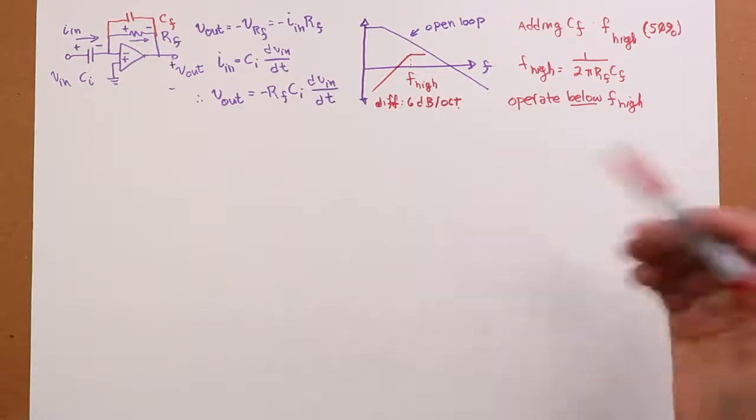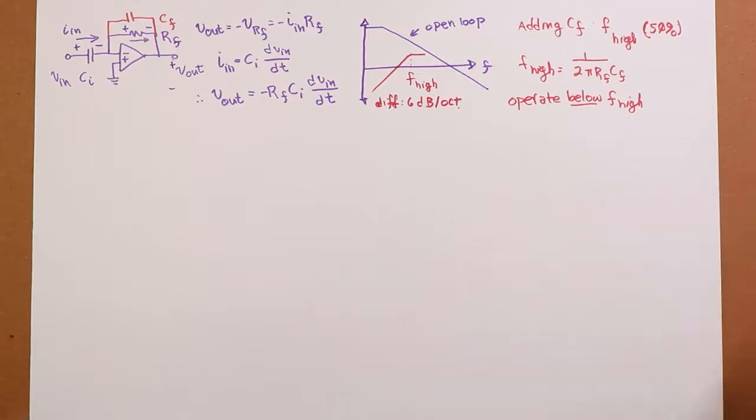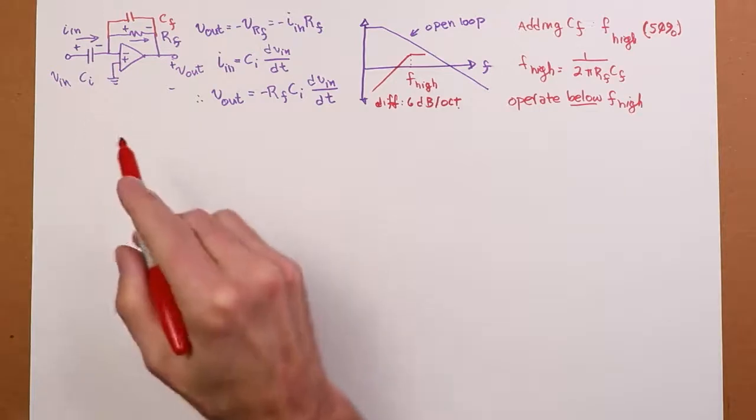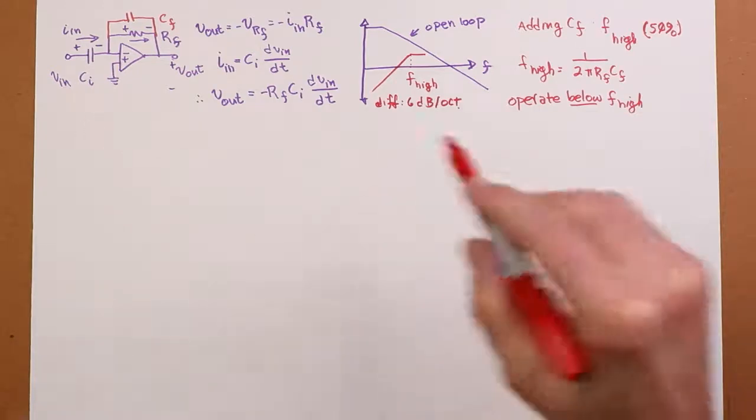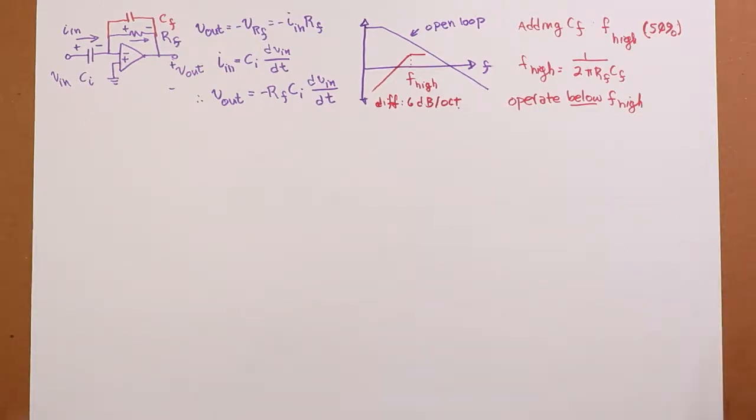The integrator tends to be a better behaved, more accurate circuit. It does, however, have problems with DC offsets. This guy, on the other hand, has sort of speed problems. You're going to need a high speed op amp, especially if you have very dynamic, quickly changing waveforms. Otherwise, you're going to be suffering issues with rise and fall times.